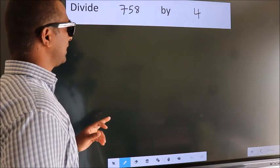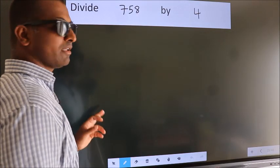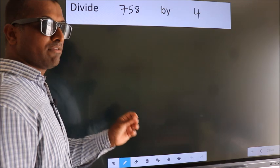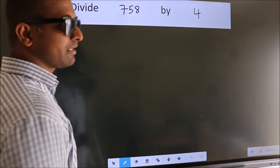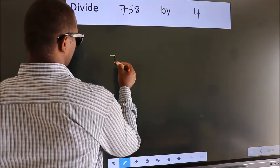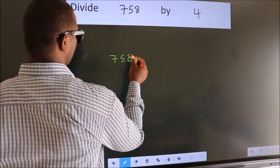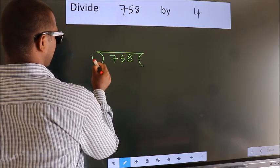Divide 758 by 4. To do this division, we should frame it in this way. 758 here, 4 here.